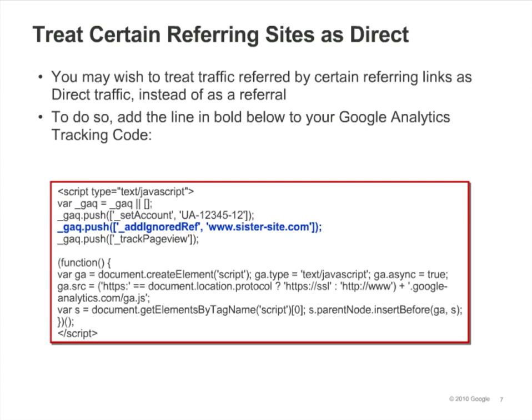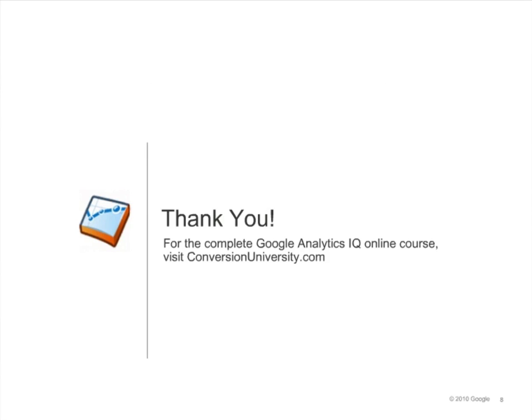You can also treat referrals from certain sites as direct traffic instead of as referrals. For each site that you want to exclude as a referral and treat as direct, add a call to AddIgnoredRef in your Google Analytics tracking code and specify the name of the site as the argument.